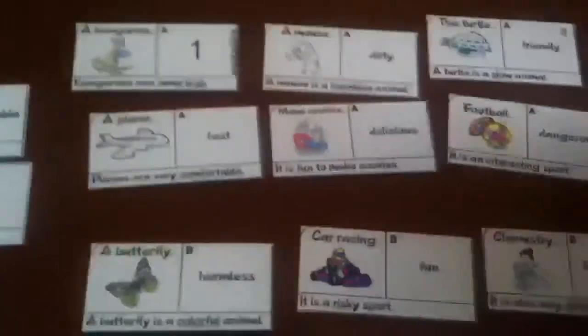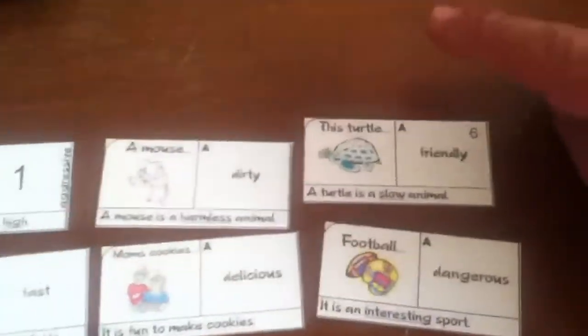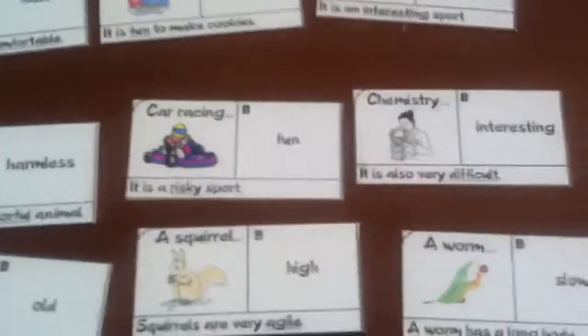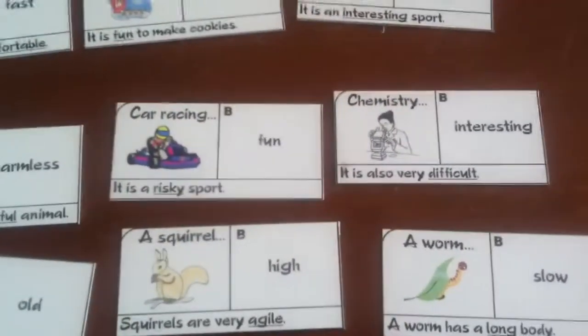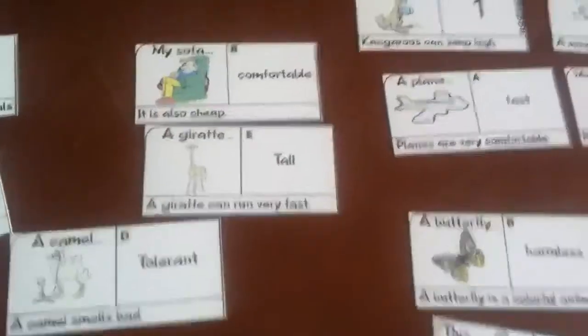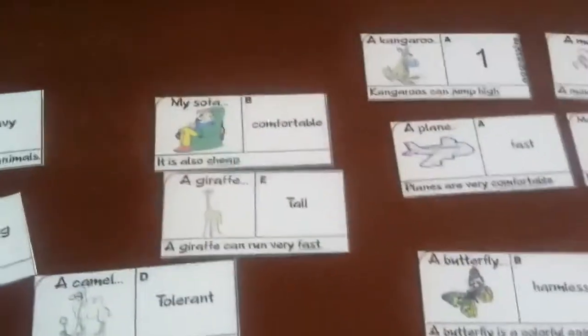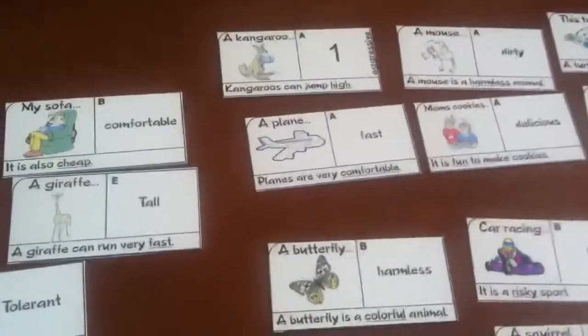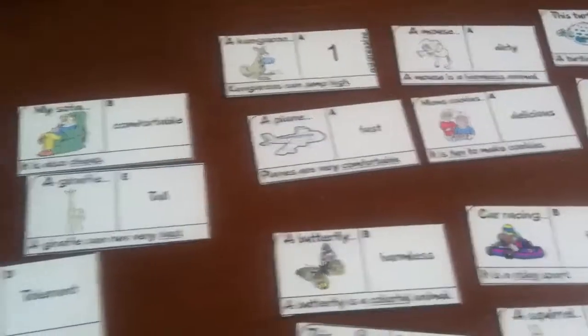What you have to do is start with card number one. One of the students — and as you can see, we have divisions. We have this set of cards that have a letter A, sets of cards that have a letter B, cards that have a letter C, and so on. You don't want to give a student a lot of A cards — you want them to have different cards: A, B, C, D.